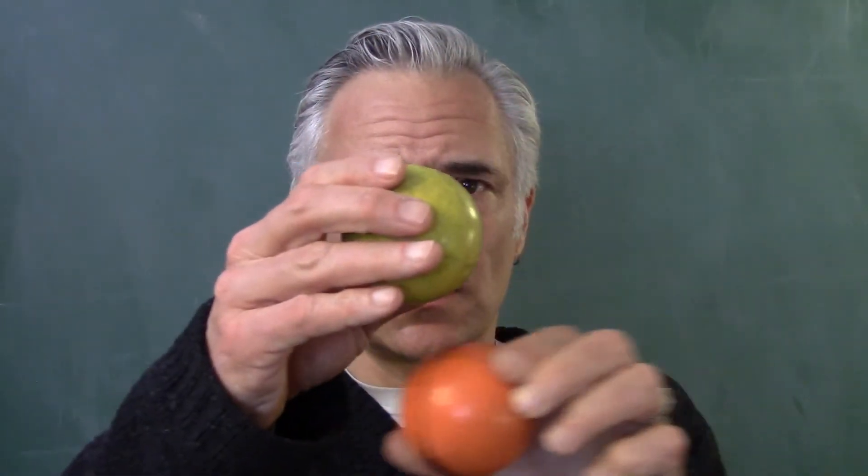So Michelson and Morley did just that. They carried out careful measurements of the speed of light at different points in the Earth's orbit and they found the same value for light every time. So Michelson and Morley fail to detect evidence of the ether.